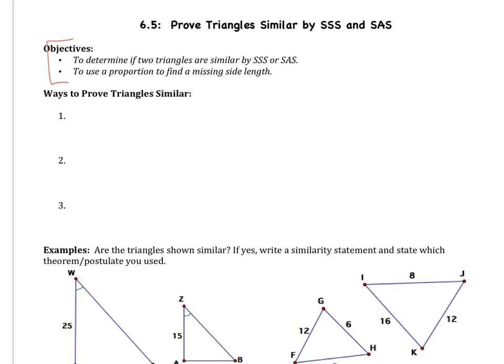So we have two objectives. First, we're going to determine if the triangles are similar, and then we're going to use proportions to find missing side lengths. Like last section, we're not actually going to be writing any proofs. Instead, I'm going to give you some figures, and you're going to tell me yes or no whether the figures are similar.